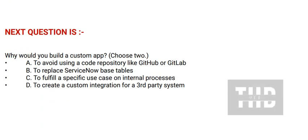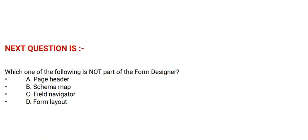Next question: Why would you build a custom app? Choose two options. Option A: to avoid using a code repository like GitHub or GitLab. Option B: to replace ServiceNow based tables. Option C: to fulfill a specific use case on internal processes. Option D: to create a custom integration for a third-party system. The correct answer is Option C.